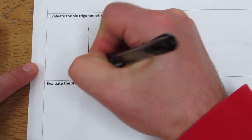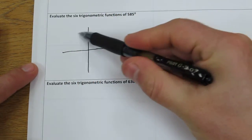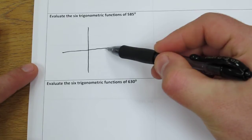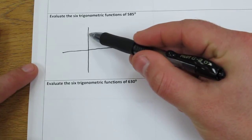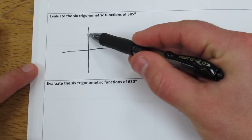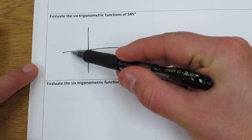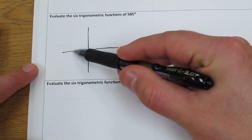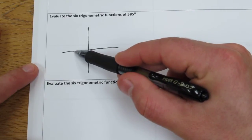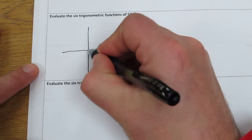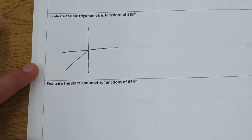Evaluate the six trigonometric functions of 585. Let's start by figuring out where 585 is. One full rotation is 360 degrees. Another 90 degrees gets us to 450, then another 90 degrees would get us to 540. We're trying to get to 585, we're at 540 right now, so another 45 degrees will get us to 585.